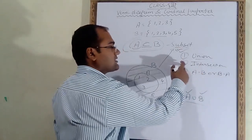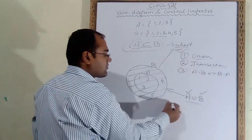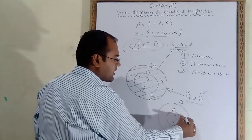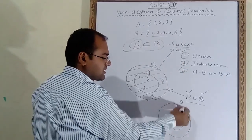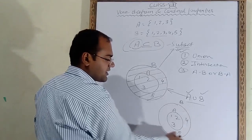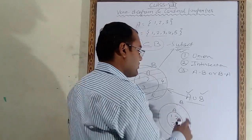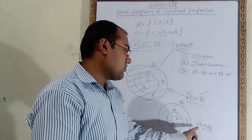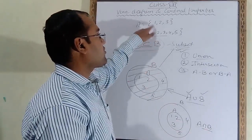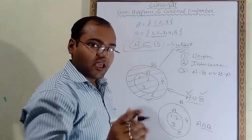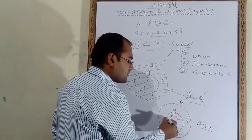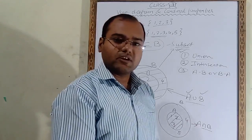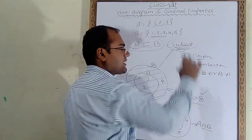For intersection in the subset case, we draw the same figure with B as the outer circle and A inside. A has 1, 2, 3 and B has 1, 2, 3, 4, 5. Intersection means common elements. The common elements of A and B are 1, 2, and 3 — which is the entire inner circle A. So we shade the inner circle to show A intersection B.